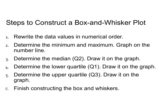In order to calculate a box and whiskers plot, there are a couple of steps. First, rewrite the data values in numerical order. Then determine the minimum and maximum and graph them on the number line. Then determine the median and graph it on the number line. Then find the lower quartile Q1 and the upper quartile Q3, graphing each on the number line. Finally, use that to construct your box and whiskers.